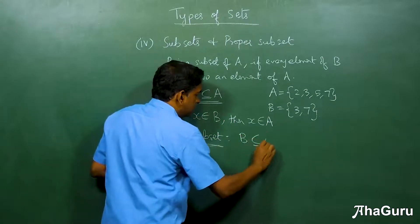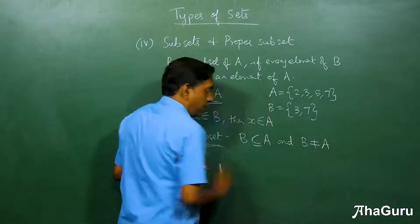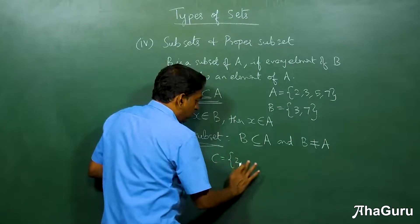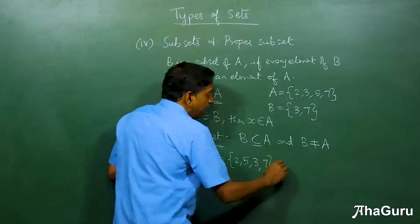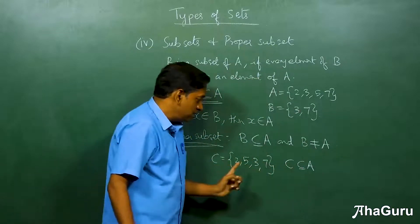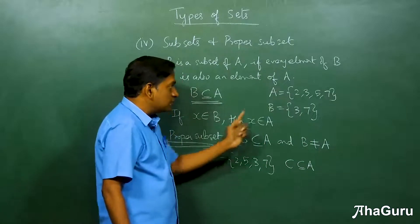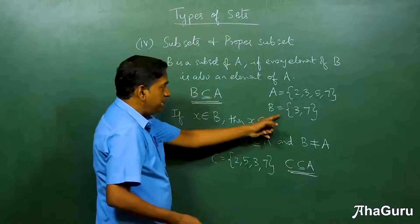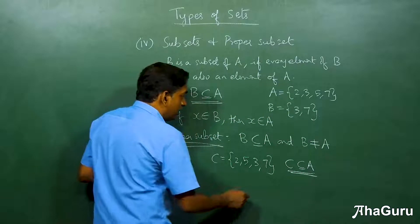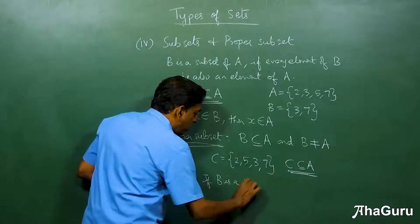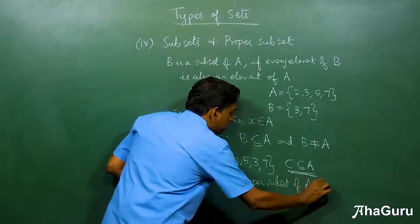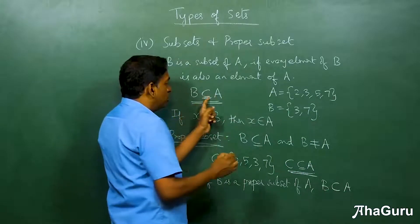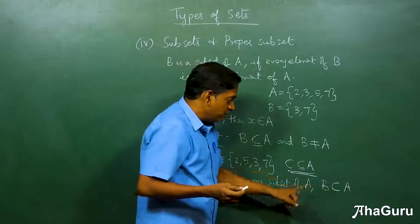A proper subset is one where B ⊆ A and B ≠ A. If we write C = {2, 5, 3, 7}, then C is a subset of A but C is actually equal to A, so C is not a proper subset. Whereas B = {3, 7} is a proper subset of A. A proper subset is denoted B ⊂ A — without the underline. The subset symbol ⊆ has an underline indicating the possibility of equality, while the proper subset symbol ⊂ does not.